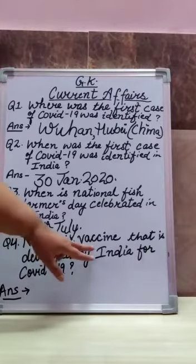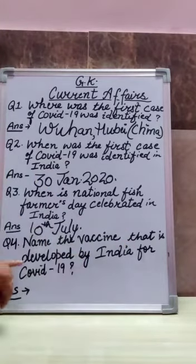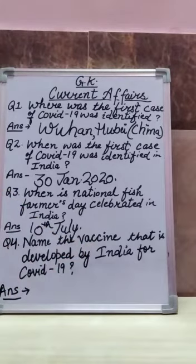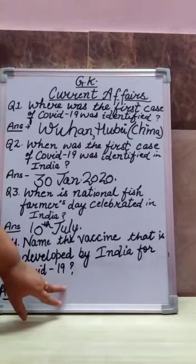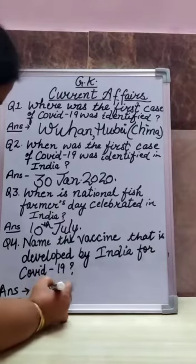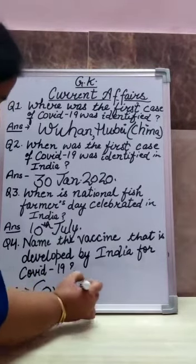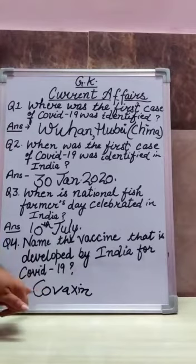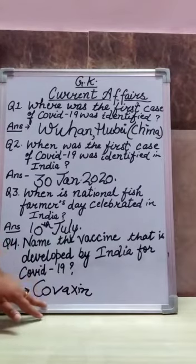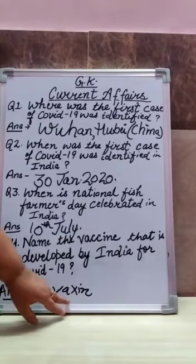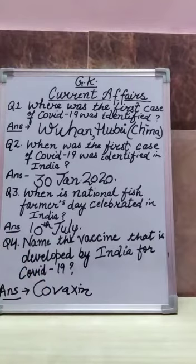Question number four: Name the vaccine developed by India for COVID-19. Which vaccine has India developed for Corona? Your answer is Covaccine. If this comes, there is hope that people affected by Corona will recover very soon.